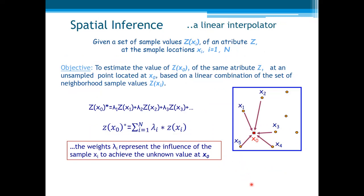Let us state the form of our linear interpolator. Given a set of sample values, z(xi), of an attribute z, at sample locations xi, i equal 1 to n. Given those samples, the objective is to estimate, to interpolate, the value z(x0), of an unsampled location of the same attribute z, at an unsampled point located at x0, based on a linear combination of the set of neighborhood values z(xi). So, the weights λi represent the influence of the sample xi to achieve the unknown value x0.